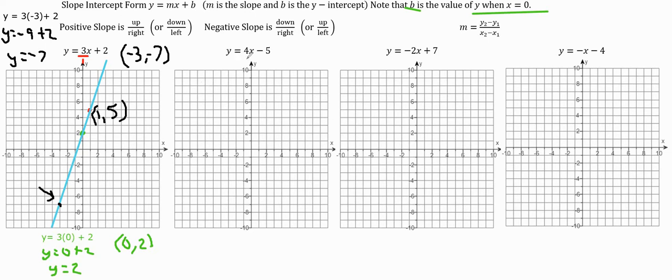For the next equation, y equals 4x minus 5, let's start at the y-intercept, which is negative 5. We go down 5 and put a dot there. Our slope is 4, which is the same as 4 over 1. This is positive slope, so we go up 4 (1, 2, 3, 4) and right 1 from the first dot, giving us a dot right there. Then we draw a straight line through both points.